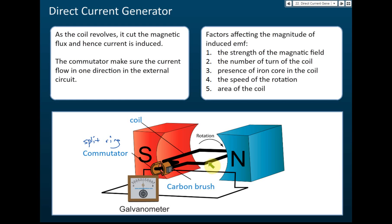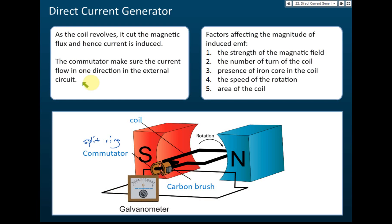You need to know the functions of the commutator. The internal circuit is inside the generator, and the external circuit is outside. The function of the commutator is to make sure that the current always flows in one direction — the same direction — in the external circuit.